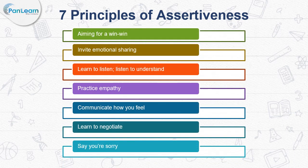Now let's learn the seven principles of assertive communication. Principle 1: Aiming for a win-win. Throw your old win-lose approach to conflict out of the window. Assertive communication requires that you approach every disagreement with the ultimate goal of both of you winning — only when you are both happy and healthy is it possible to be happy and healthy together. Principle 2: Invite emotional sharing. When your partner comes home cranky or withdrawn, ask what's wrong sincerely. Let them tell you their thoughts and emotions instead of imagining their internal life and making assumptions.